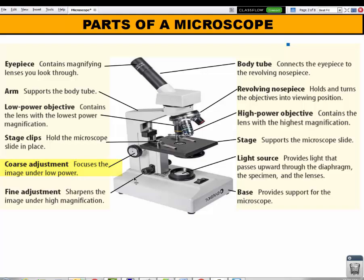Then we have a smaller adjustment knob called the fine adjustment, and this sharpens the image under high magnification. So the fine adjustment knob is only used on the blue lens. This way the blue lens doesn't drive through the slide and crack the slide that we're looking at.